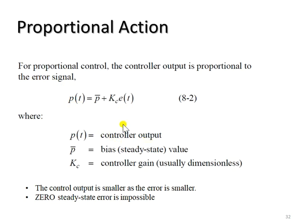the controller output. p̄ is the bias value or steady-state value. In some articles or books, this value is referred to as the nominal controller output. The controller output will also depend